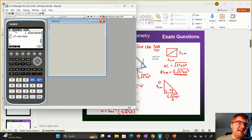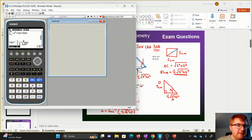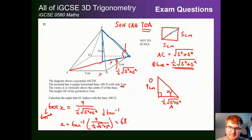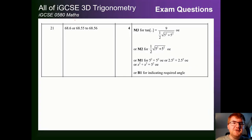Make sure your calculator is in DEG mode. We need inverse tan, then a fraction: 9 at the top, and at the bottom 0.5 times the square root of 5 squared plus 5 squared — close the bracket and press the magic button. We end up with 68.55, which rounds to 68.6 degrees to one decimal place. This is a four mark question, and as long as you've got sensible rounding that's perfectly fine — one or two decimal places is acceptable.